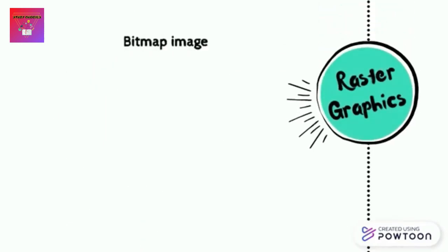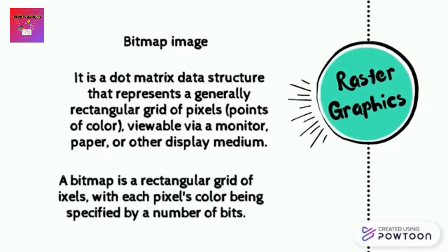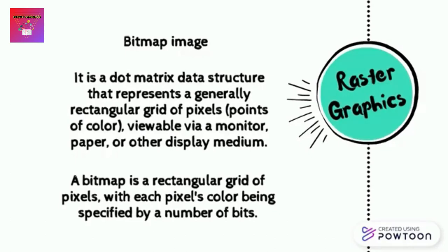Raster image is also known as bitmap image. It is a dot matrix data structure that represents a rectangular grid of pixels — points of color — viewable via a monitor, paper, or other display medium. A bitmap is a rectangular grid of pixels with each pixel's color specified by a number of bits. A raster image is characterized by its width and height in pixels, and by the number of bits per pixel, or color depth, which determines the number of colors it can represent. Its modification level is higher depending on the depth of an image, but its file size is also bigger and it requires high computer memory. Software used to edit bitmap images includes MS Paint, Adobe Photoshop, Corel Painter, and Print Shop.